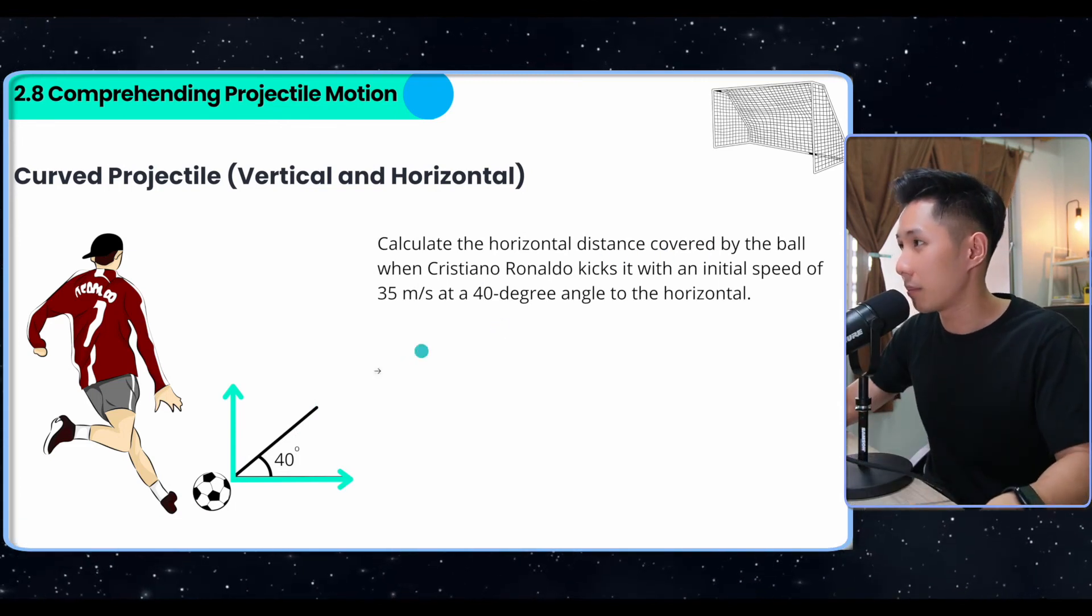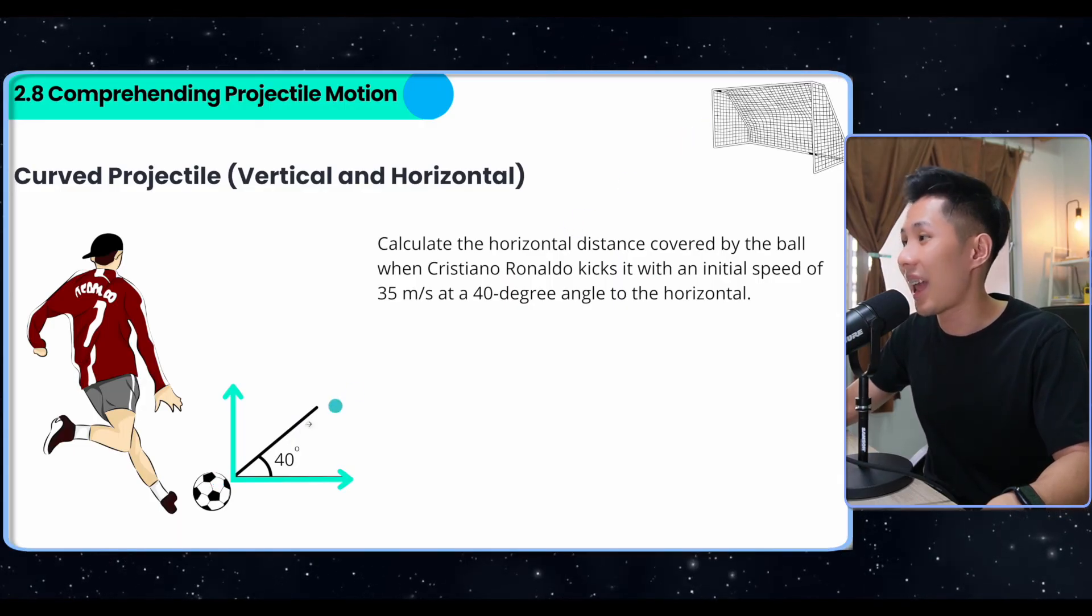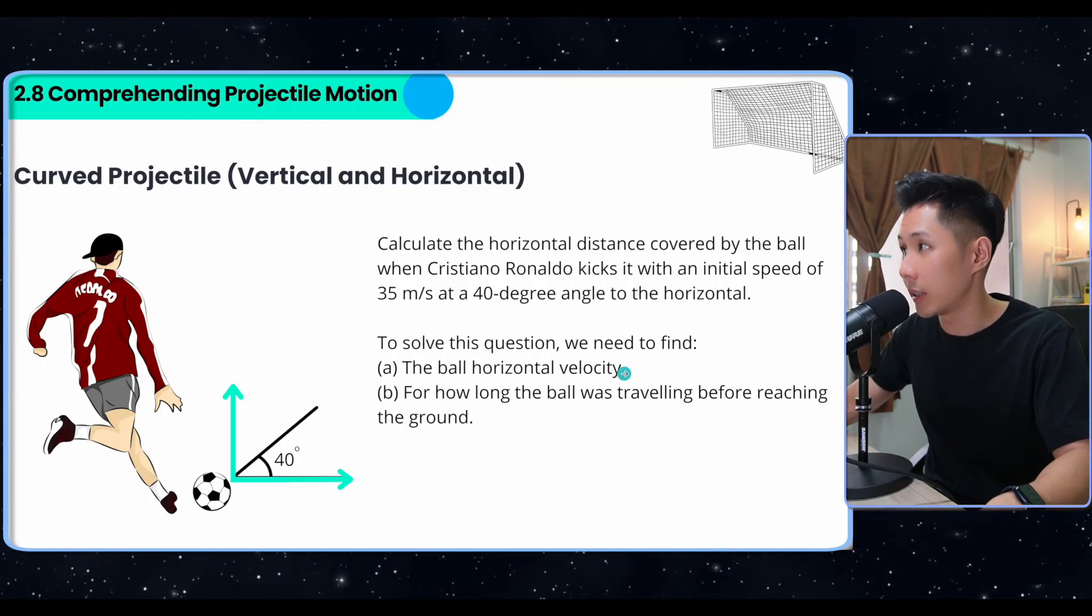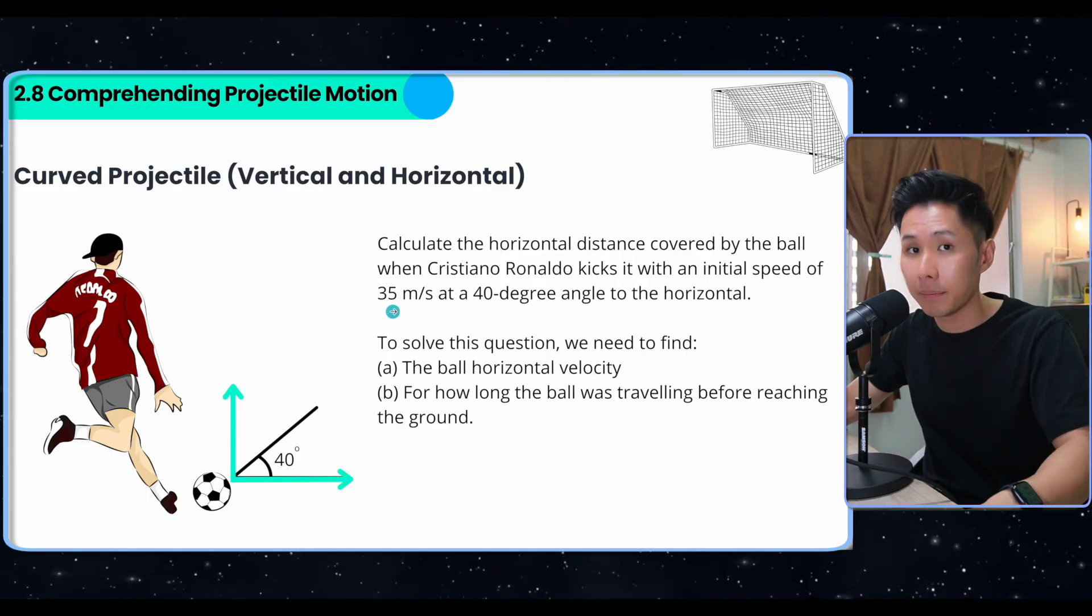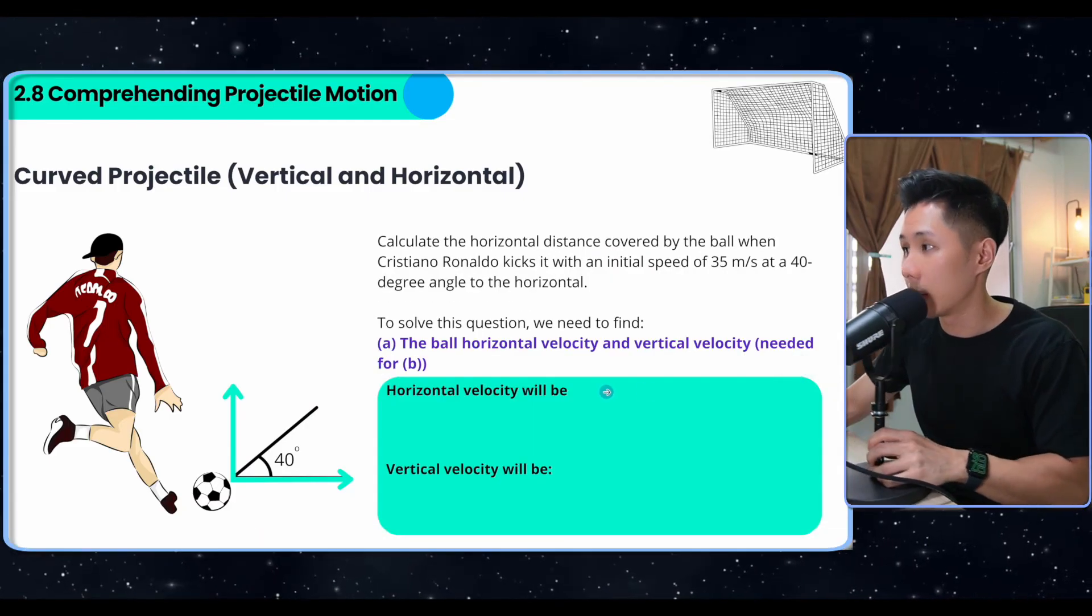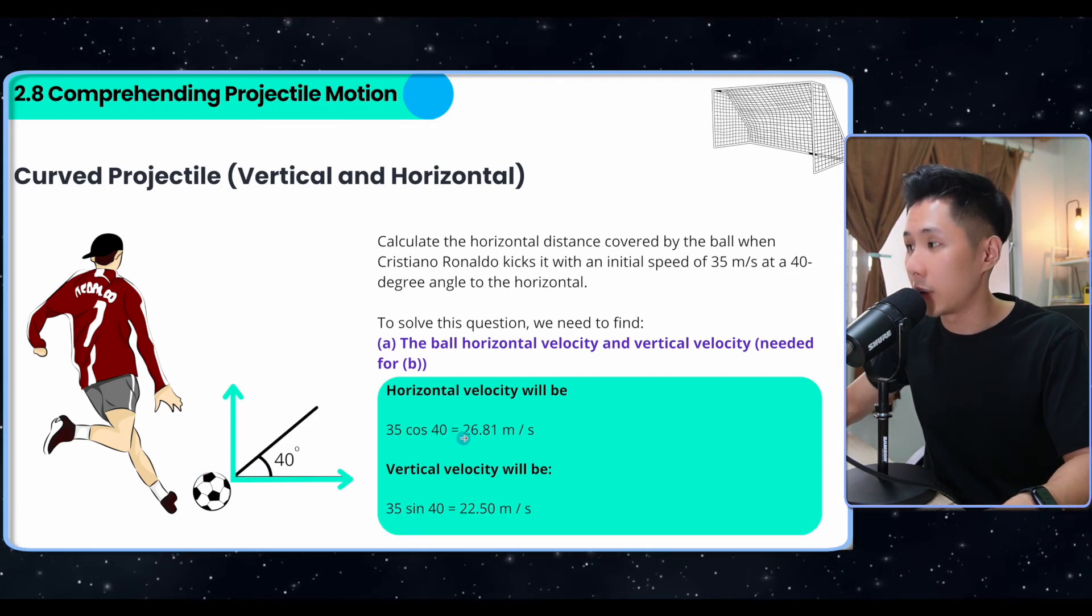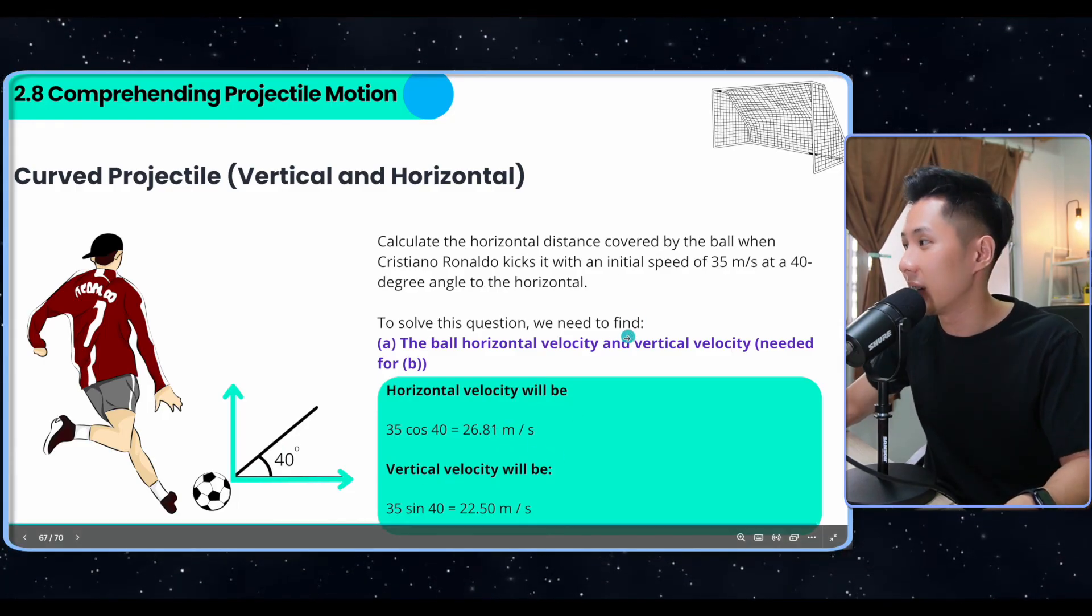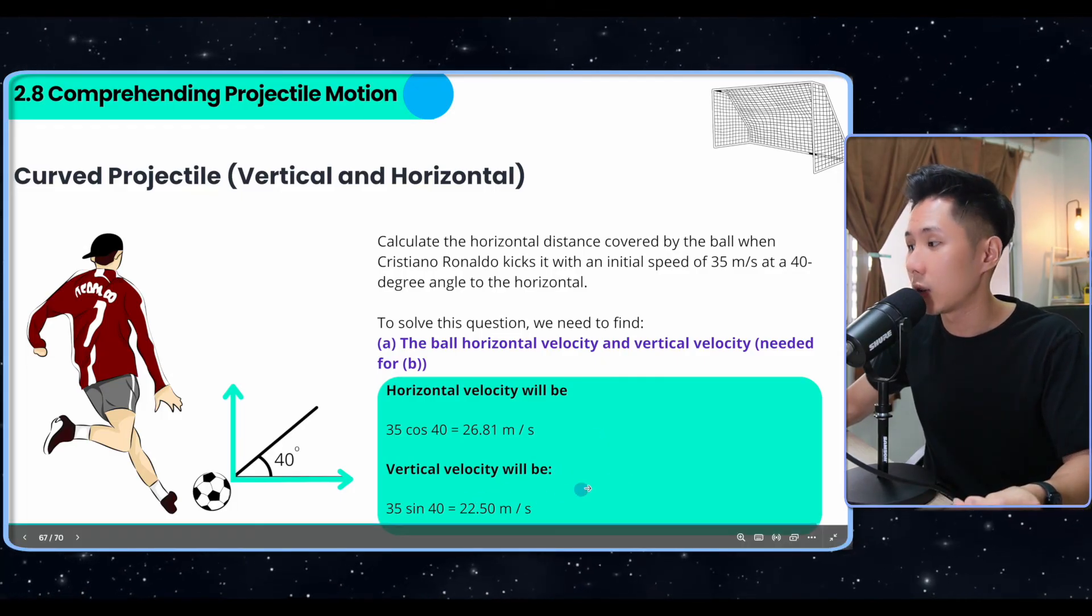But in the next question, that's when vector decomposition comes in, which is the Ronaldo that I mentioned. Now, calculate the horizontal distance covered by the ball, meaning the moment Ronaldo kicks it with an initial speed of 35 meter per second at an angle 40 degrees. Now, to solve this question, we need to first find out the ball's horizontal velocity because to find out distance, we know that we need velocity. We need time. But we can't use 35 because that's not the horizontal velocity. That's just the velocity of the vector. So to find the horizontal velocity, I will use cos because it's adjacent towards the angle given. 35 cos 40. So this is the horizontal velocity of the ball. I'm also calculating the vertical because even though they didn't ask, but it will be required in the next question. So the vertical velocity is 35 sin 40, 22.5.